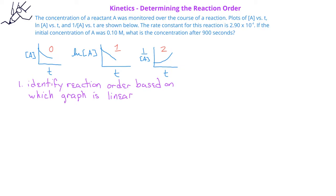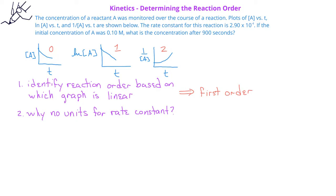In this case, we see that the only graph that is linear is natural log of concentration versus time. Therefore, we know that this reaction is a first order reaction. You might wonder why no units were given for the rate constant. In this case, I wanted you to use the graphs to determine the reaction order, instead of using the units for the rate constant to determine the reaction order.